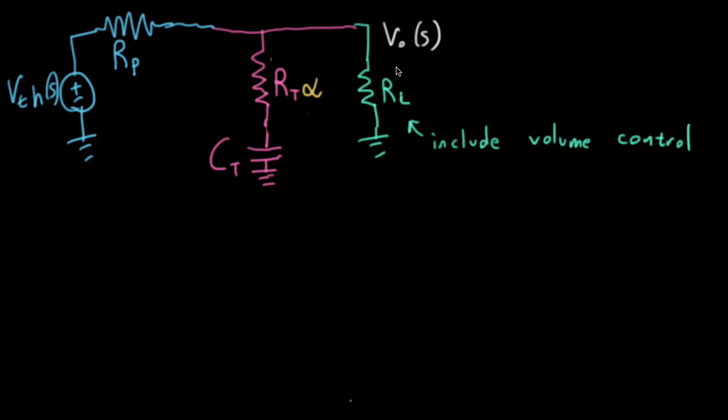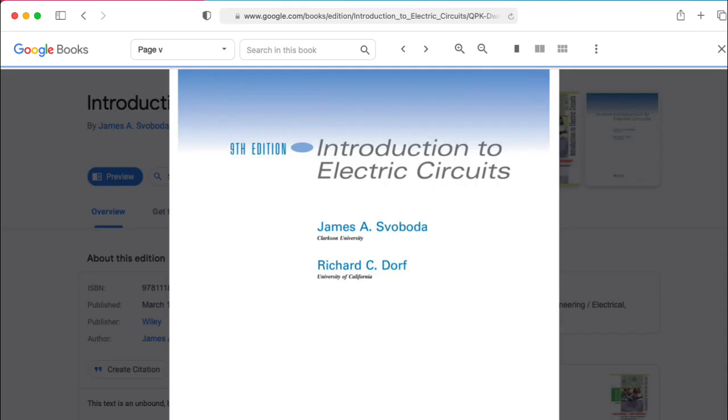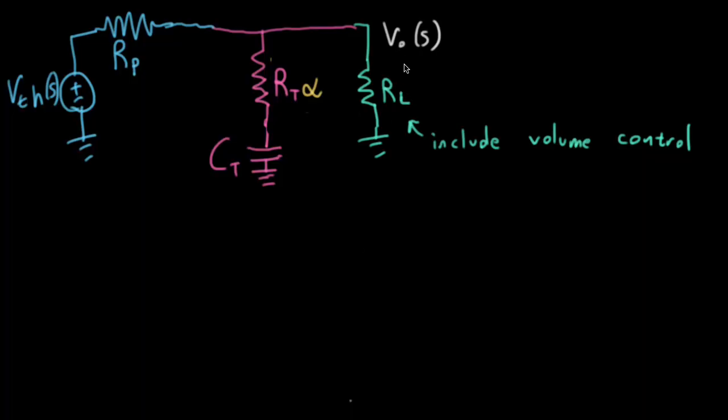And once again, you can use a voltage divider rule and various ECE 2040 kind of concepts and figure out what VO is as a function of this Thevenin voltage here. But whatever raw formula you get from applying circuit theory, you'll usually have to do a ton of algebra on it to get an expression that's easy to interpret in an intuitive way.